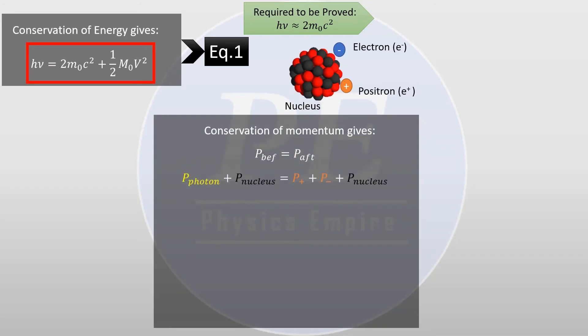Before the collision, the nucleus had no velocity, so its momentum is zero. After the collision, the electron-positron pair was created at rest, so the pair also has zero momentum. I shall take the classical form of the momentum.